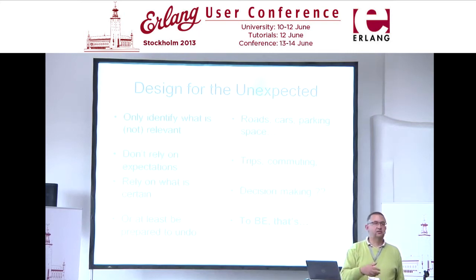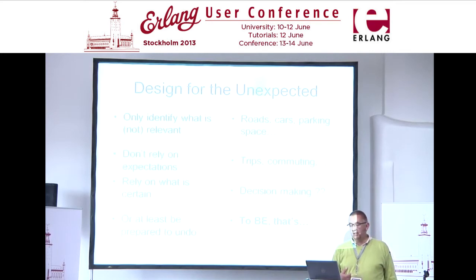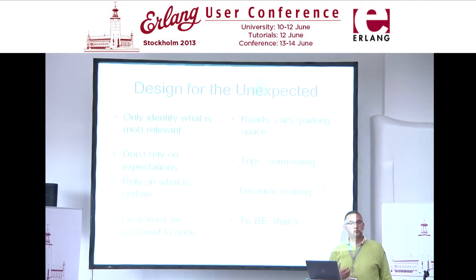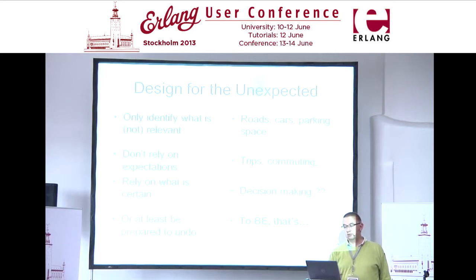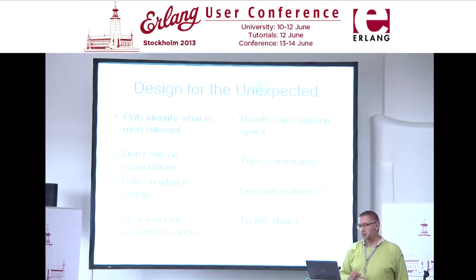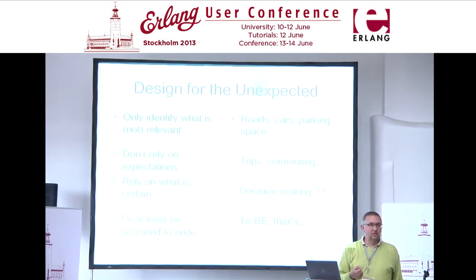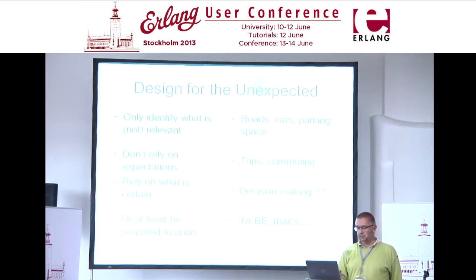Instead of asking what are the performance indicators and key objectives, you start — like in OO design — by identifying what's relevant. What's your problem domain? You don't rely on expectations, you rely on what's certain. In intelligent traffic, you know there will be roads, there will be cars, people will be commuting, bringing kids to school, going to work, shopping on the way back. How they make decisions in there — that you leave out of sight when making your intelligent infrastructure. You have to look at what exists — the question is not to act or decide or choose. It's not optimizing, it's really to reflect what exists. If you implement services that rely on expectations, be prepared to undo them.